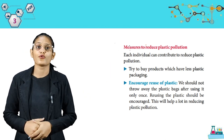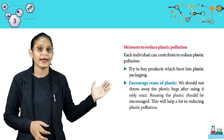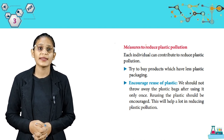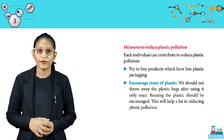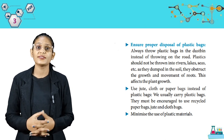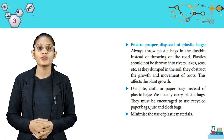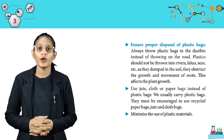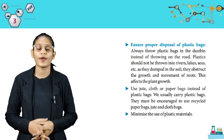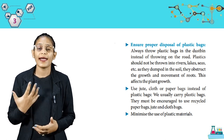Measures to reduce plastic pollution: prefer to buy products which have less plastic packaging. Encourage reuse of plastic — we should not throw away plastic bags after using only once. Always throw plastic bags in the dustbin instead of on the road. Plastic should not be thrown into rivers, lakes, etc. As they accumulate in the soil, they obstruct plant growth. Use jute, cloth or paper bags instead of plastic bags. We must be encouraged to use recycled paper bags, jute and cloth bags, and minimize the use of plastic materials.